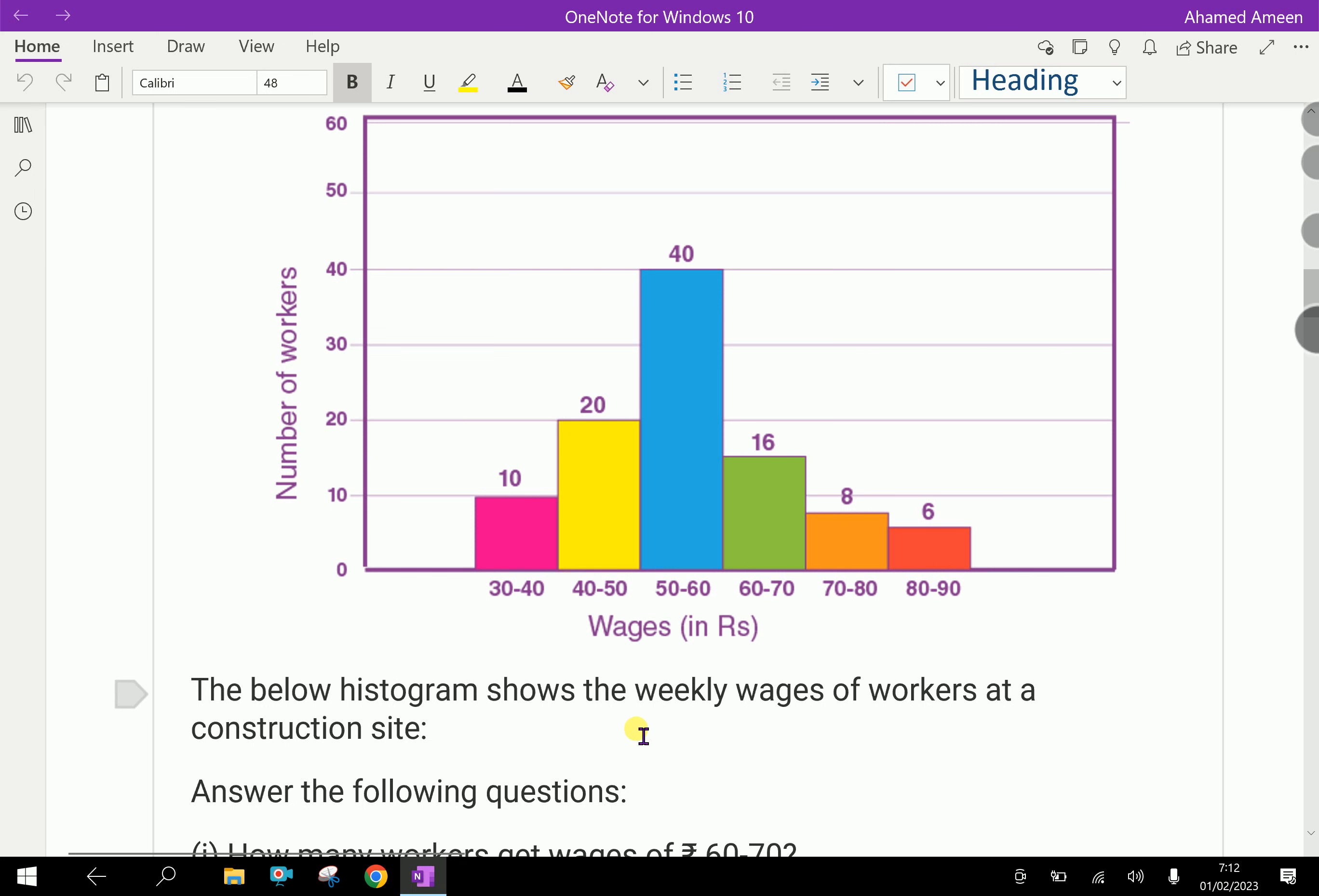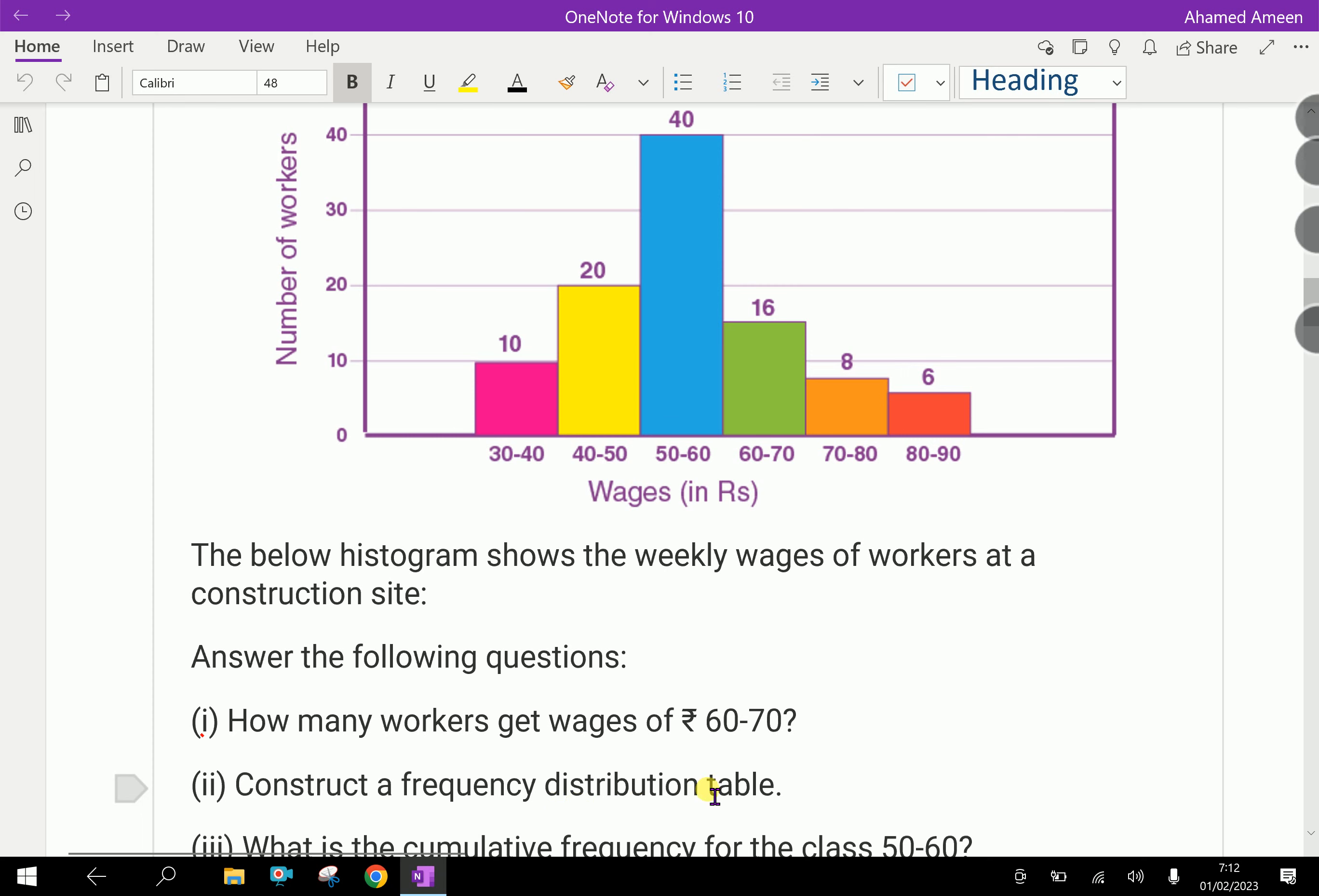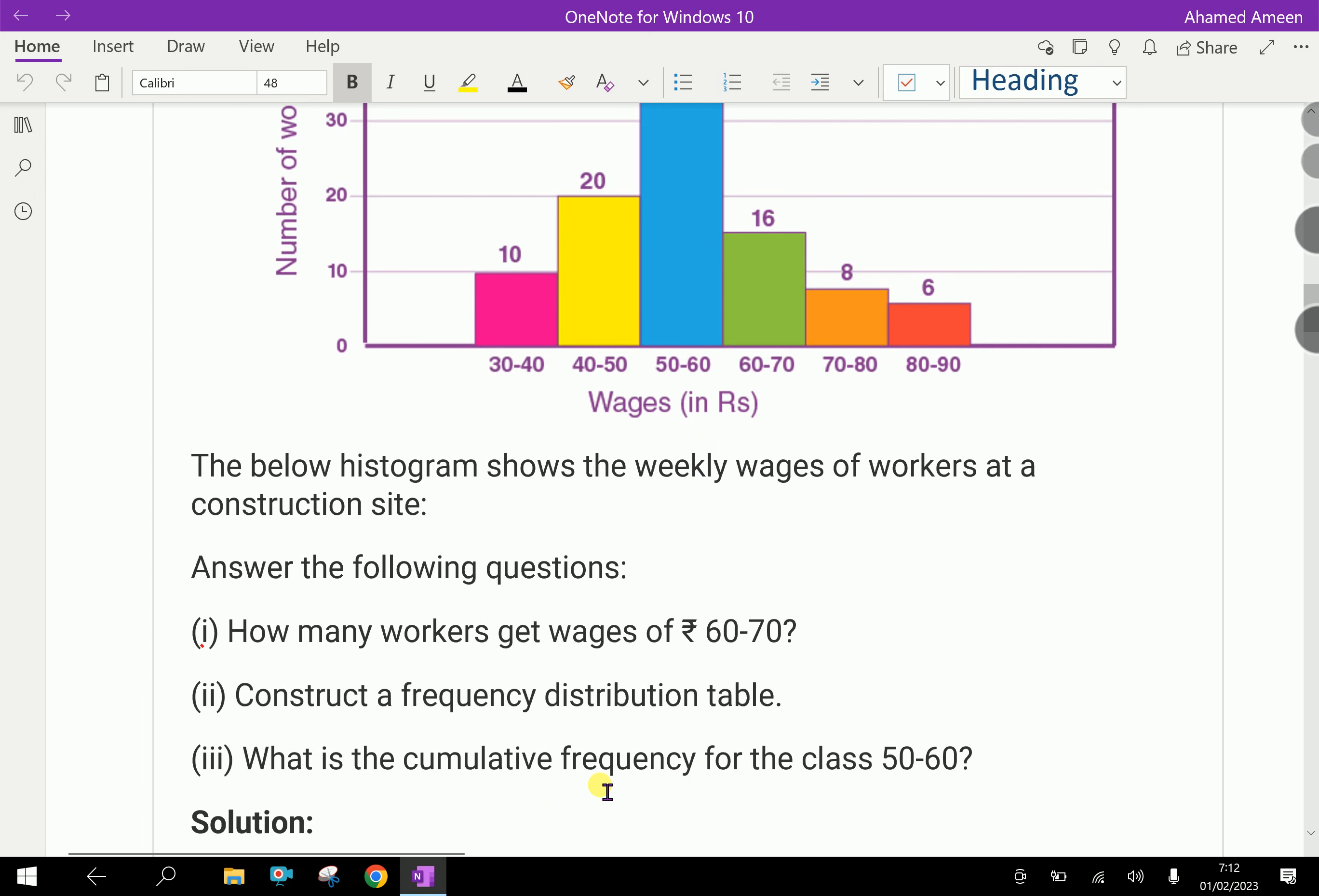The below Histogram shows the weekly wages of workers at a construction site. Answer the following questions: How many workers get wages 60 to 70? Construct a frequency distribution table. What is the cumulative frequency for the class 50 to 60?